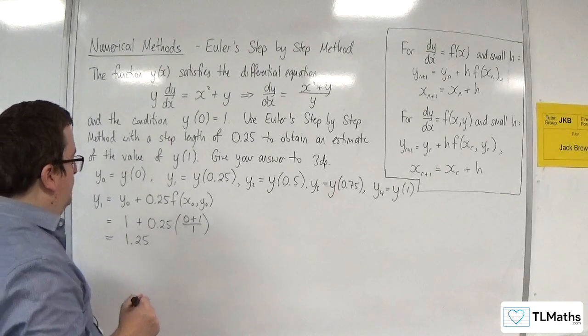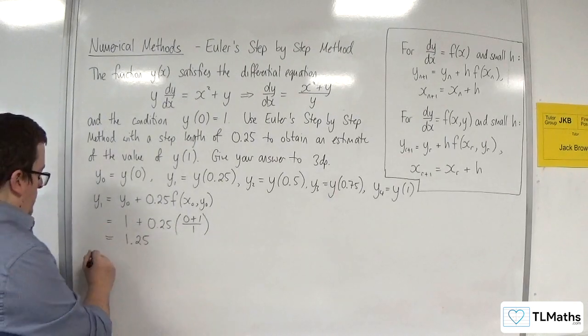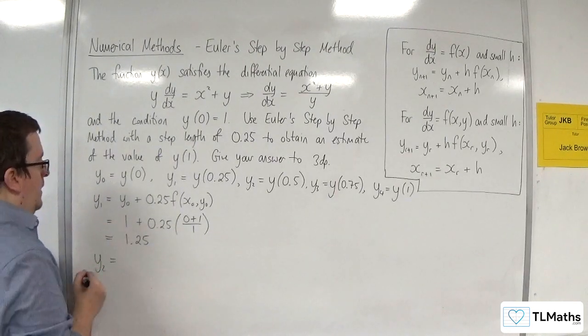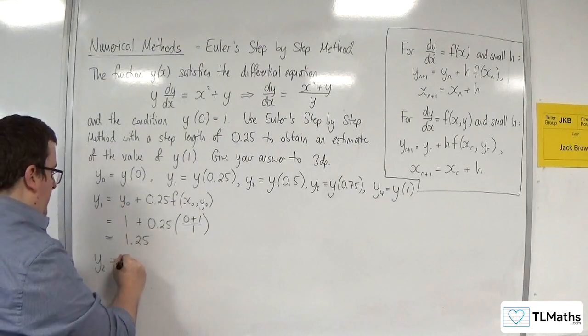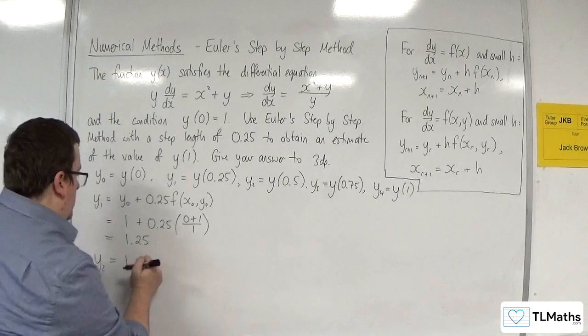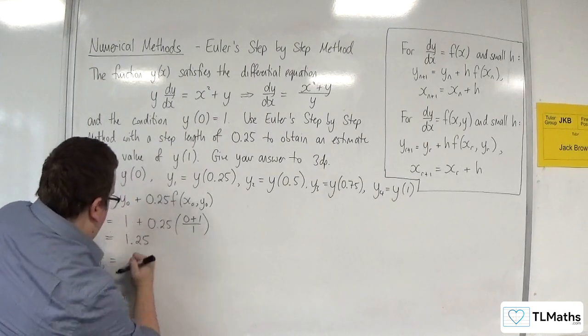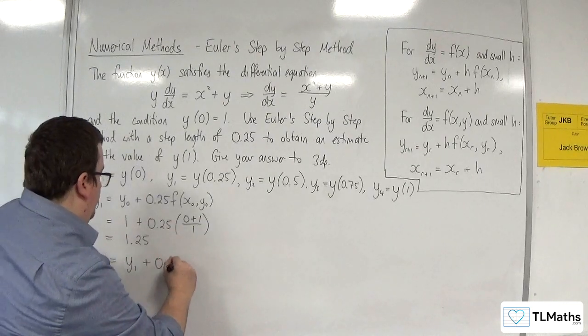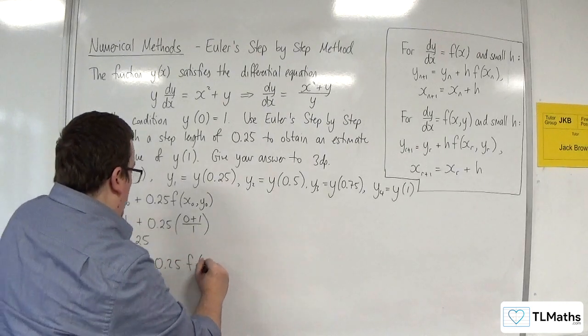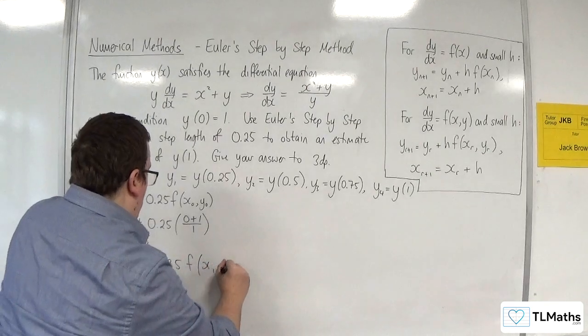So then y₂ will be equal to y₁, so 1.25. Should we write this down? Let's write it down. So y₁ plus 0.25 times f of x₁, y₁.